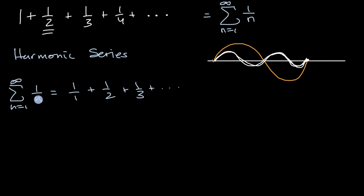But what if we were to raise each of these denominators to, say, the second power? So you might have something that looks like this, where you have from n equals one to infinity of one over n to the second power. Well, then it would look like this.